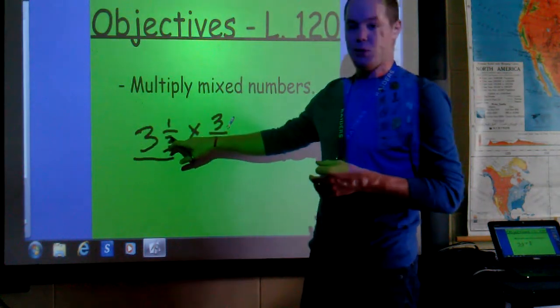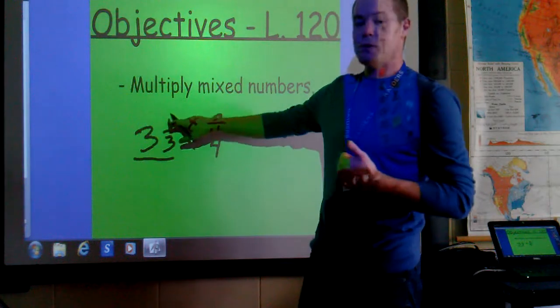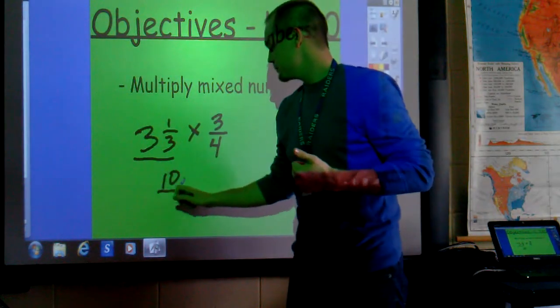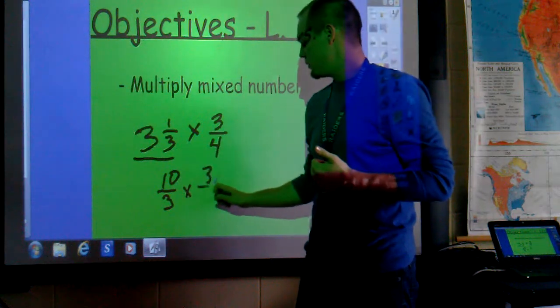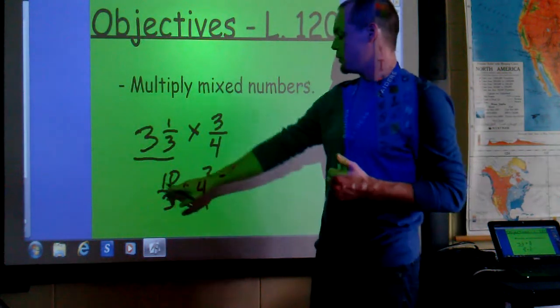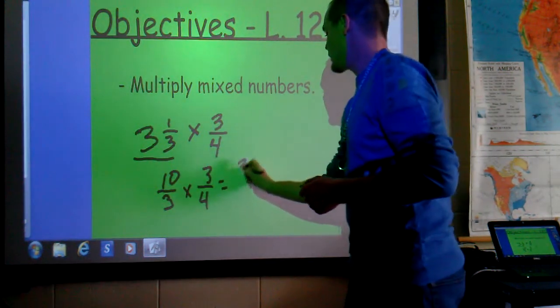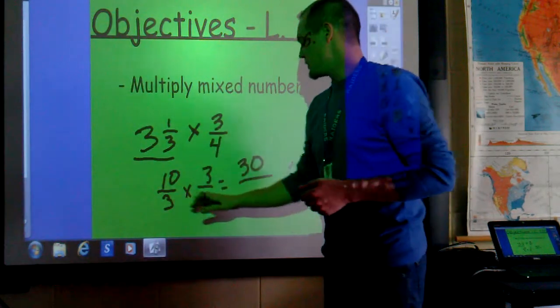We'll take 3 and multiply it by 3 and get 9, and add it to 1 and get 10 thirds. We then multiply that by 3 fourths. Multiply straight across. 10 times 3 is 30. 3 times 4 is 12.